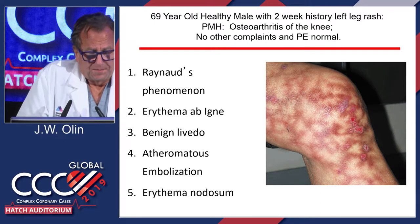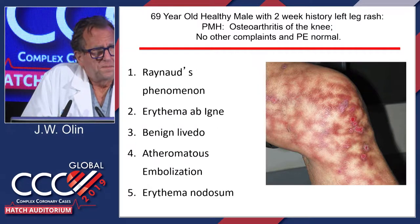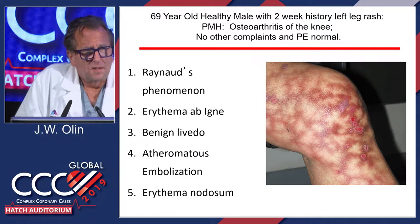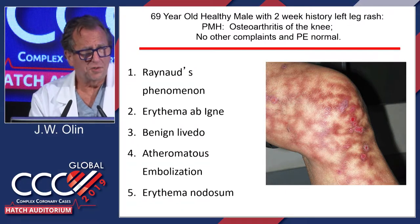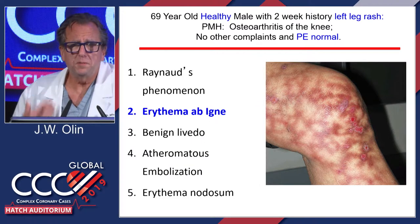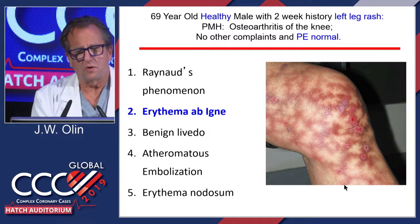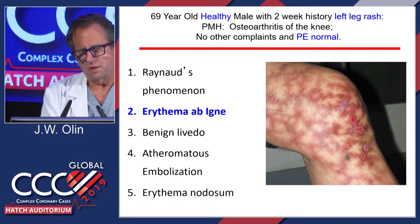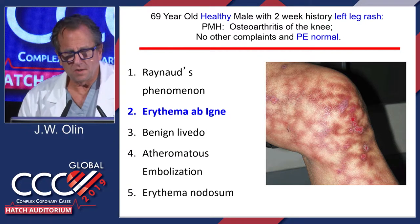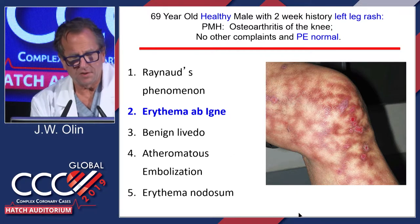This is a livedo-type pattern. This is erythema ab igne, and it could be mistaken for something like atheromatous embolization. But it's localized to this area — it's called heater pad dermatitis. In places where there's cold weather and poor heating, this can occur. If it's not recognized, it never goes away. You shouldn't go on a wild goose chase looking for embolization of plaque when you see this.